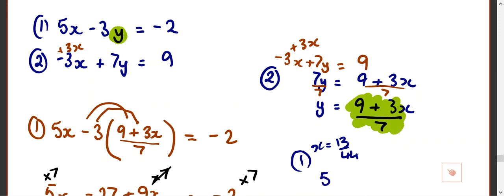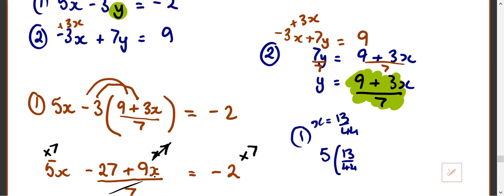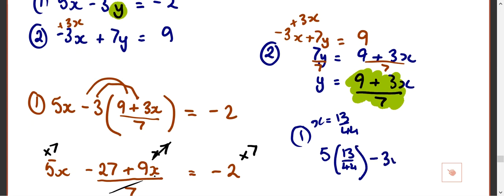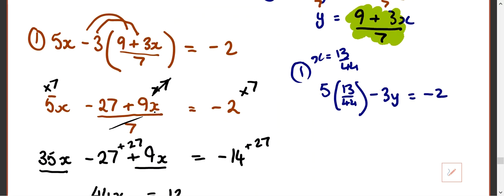Number 1 or number 2? They're both going to be relatively tricky, so let's just use number 1. With x equals 13 over 44. And we have 5 times 13 over 44 minus 3y equals negative 2. So you're thinking, well that's not easy. And you're right, it's not easy. But we can deal with it. How do I do 5 times 13 over 44? We just do 5 times 13. Which is 65. 65 divided by 44 minus 3y equals negative 2.